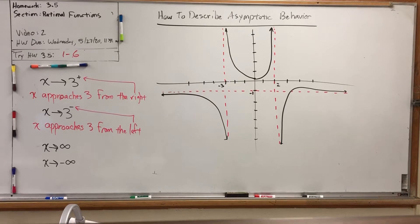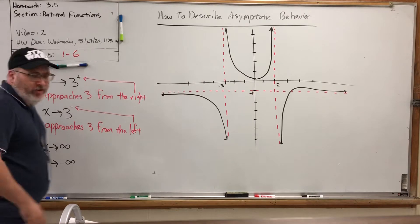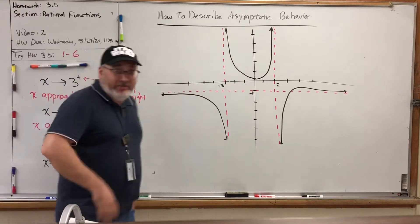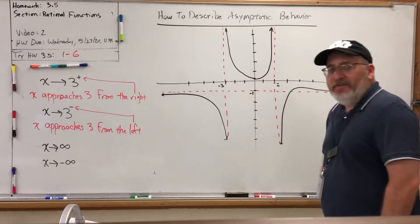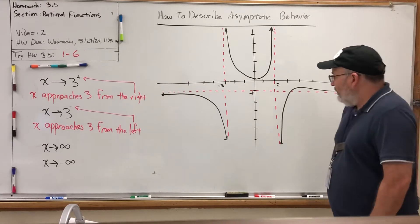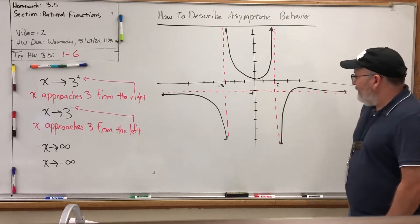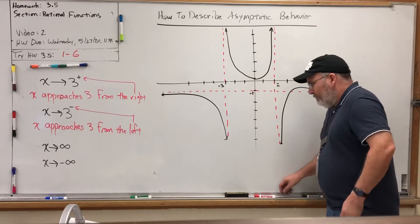This is Homework 3.5 Rational Functions, video 2, associated with questions 1 through 6 on your homework. In the previous video we took a look at Desmos.com and a graph in there, and we saw a picture that looks something like this. We talked a little bit about the role of these dotted lines, and they were called asymptotes.